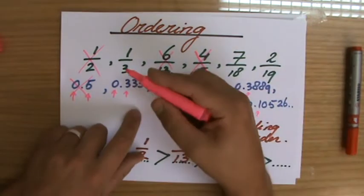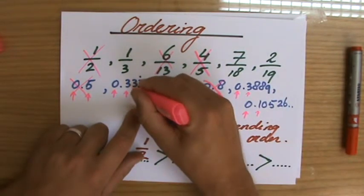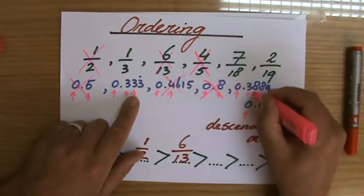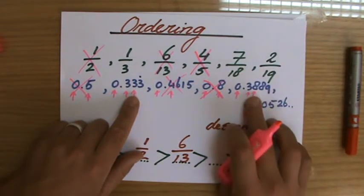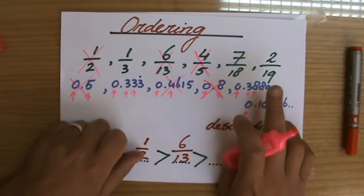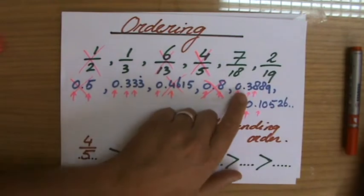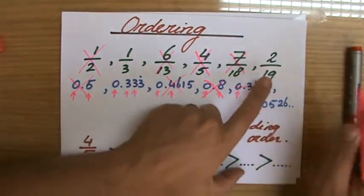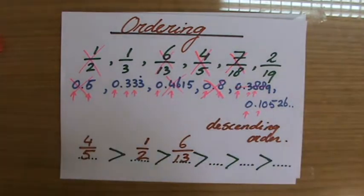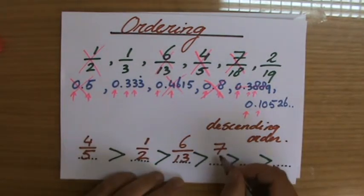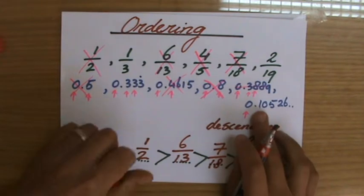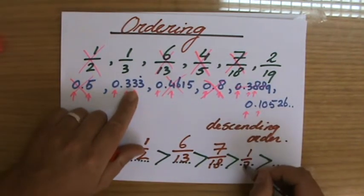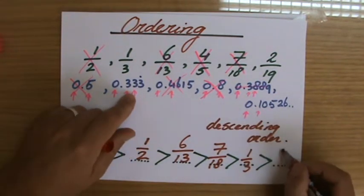So this one is bigger. Now careful because I messed it up a little bit. That is the 7/18, this one, not 2/19. It's 7/18. Then it's the 1/3 because that's a three, that's a one, 2/19 to finish with.